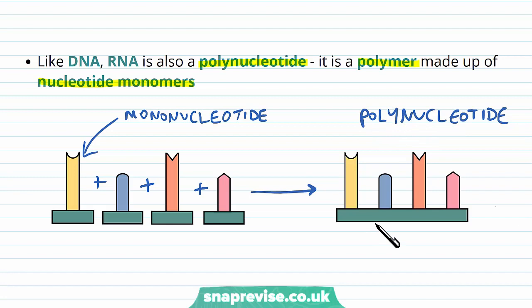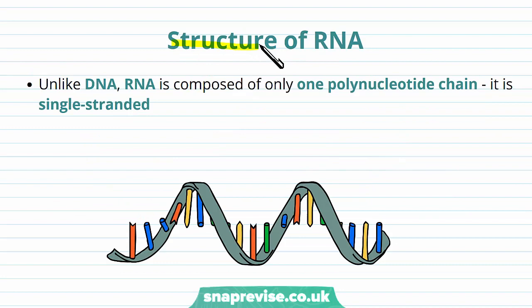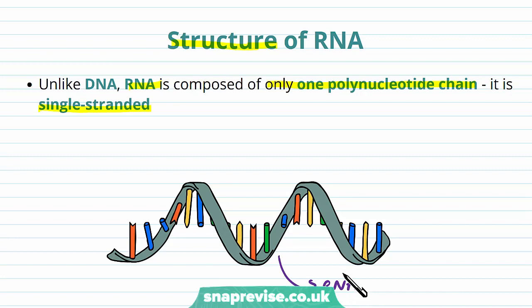Let's look in more detail about the actual structure of RNA and what the molecule looks like. There will be similarities with DNA because they're both nucleic acids and both made from polynucleotides. But there are important differences found in RNA that aren't in DNA. The main difference is that RNA is actually composed of only one polynucleotide chain — we call it single-stranded — whereas DNA is known as being double-stranded. As you can see, there's one chain of polynucleotides just going on its own; it's not joined to another chain.